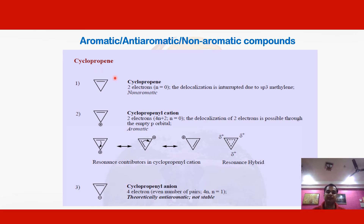Similarly, taking the example of cyclopropenyl cation, it also has one pi bond meaning two electrons, which follows Hückel's rule with n = 0 (an integer). In this case there is a positive charge at the corner of the cyclic ring, and due to this positive charge, delocalization of pi electrons is possible across the ring. Therefore cyclopropenyl cation is aromatic in nature.